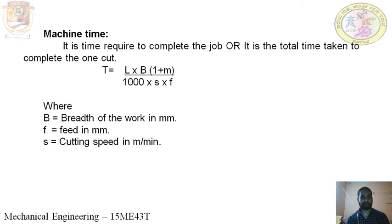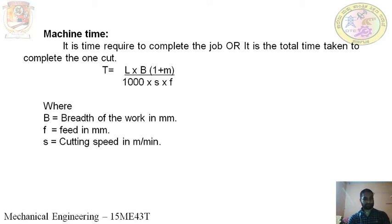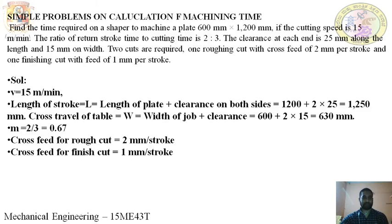B is the breadth of the job including side clearance for machining. F is the feed in millimeters per stroke, and S is the cutting speed in meters per minute.